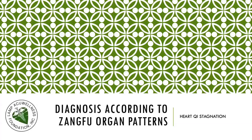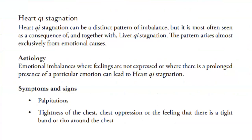Let's now proceed to diagnosis according to Zang organ patterns, with the pattern heart qi stagnation. Heart qi stagnation can be a distinct pattern of imbalance, but it is most often seen as a consequence of and together with liver qi stagnation. The pattern arises almost exclusively from emotional causes. Its etiology can be traced to emotional imbalances where feelings are not expressed, or where there is a prolonged presence of a particular emotion, and this can lead to heart qi stagnation.